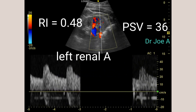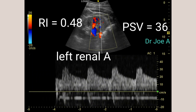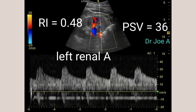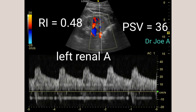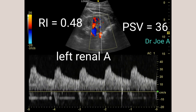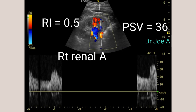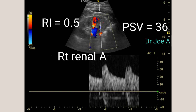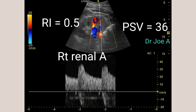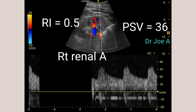The left renal artery shows an RI of 0.48 and a PSV of 36, which is normal. The measurements of renal resistive index range from 0.48 to 0.51, which falls within the upper limit of the normal range. The peak systolic velocity in both renal arteries appears to be normal.